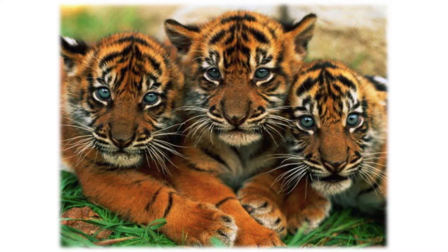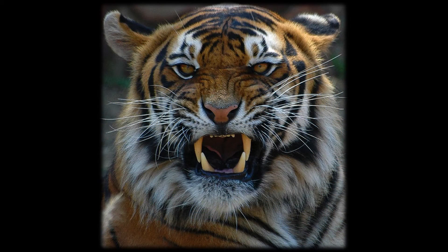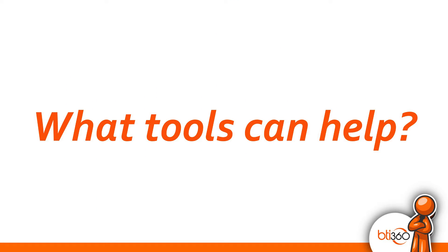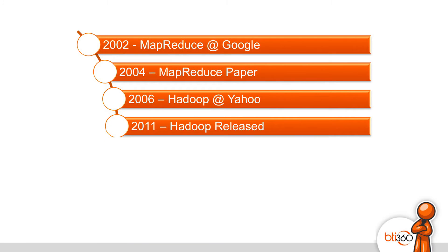When data is small, it's cute and cuddly — we can pick it up, play with it. But with everything small, it eventually gets big, and when it's big we need tools to contain it. So in 2002, just four years after Google was created, they needed help processing all the data they were taking in, so they created MapReduce. In 2004 they released the MapReduce paper, which spawned the creation of Hadoop in 2006 by Doug Cutting while he was working at Yahoo.